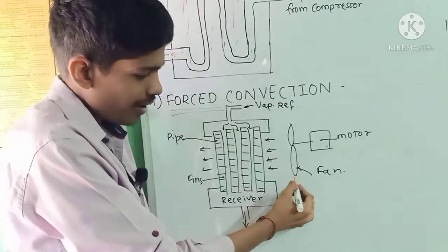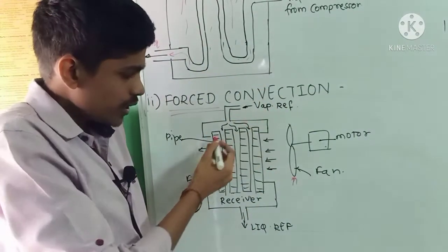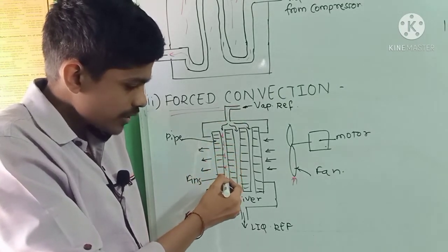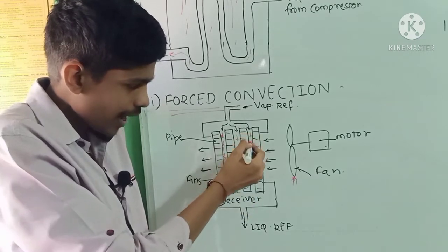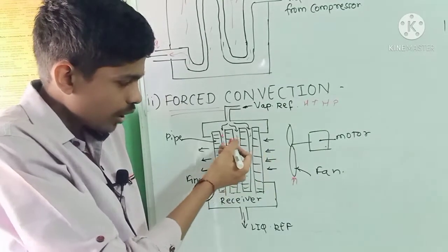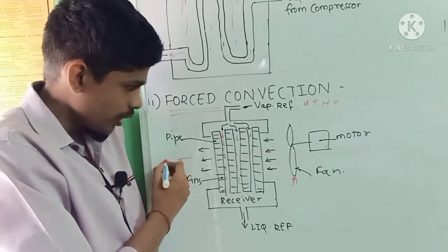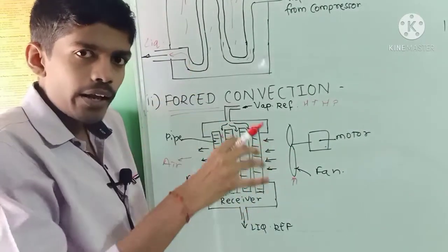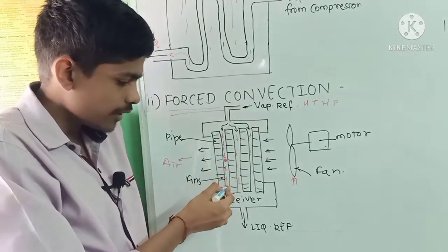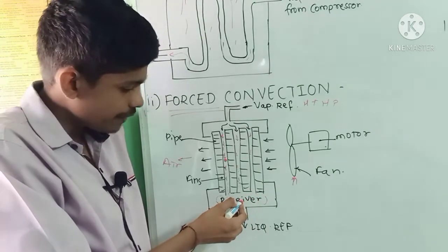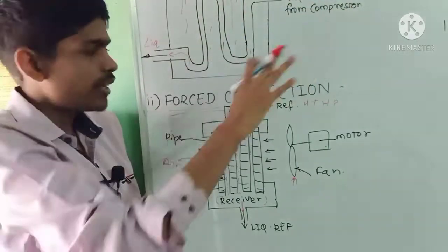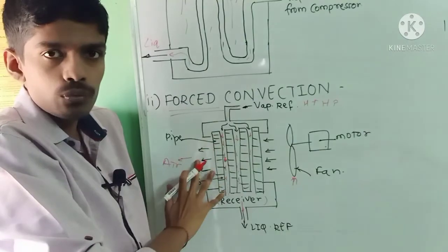In the forced convection air-cooled condenser, a fan is required to force the air over the fins. High temperature, high pressure vapor refrigerant from the compressor enters and moves between the fins. The fan motor rotates the fan, and air is forced over the fins — this air absorbs the heat from the vapor refrigerant. The refrigerant gets cooled and collected in the receiver, and the liquid refrigerant is sent to the expansion device. So there are two types of air-cooled condensers: natural convection, where condensation takes place naturally, and forced convection, where a fan is required.